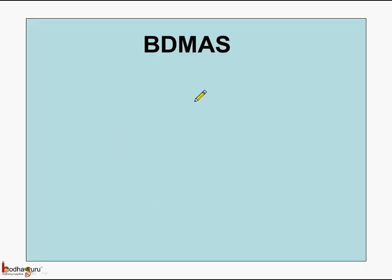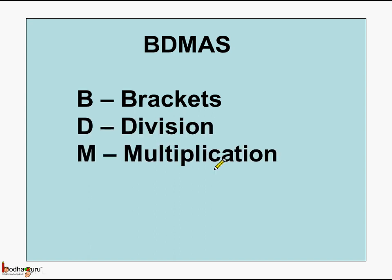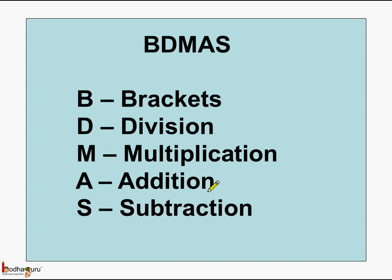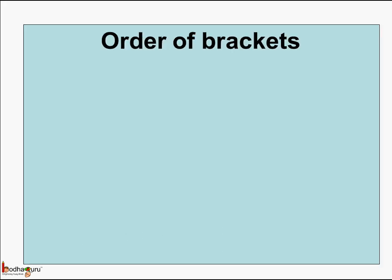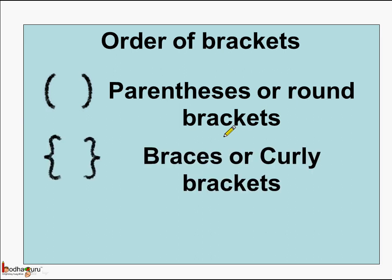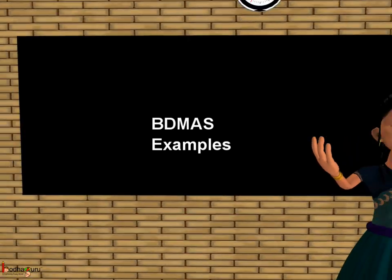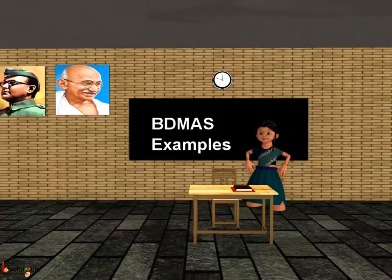To reiterate: BDMAS rule says that when there are multiple operations in an expression, brackets should be solved first, followed by division, followed by multiplication, followed by addition, and then subtraction. The order of brackets is: first round brackets (parenthesis), next curly brackets, and lastly square brackets. So now you know what is BDMAS rule. That's all for now — bye-bye children.